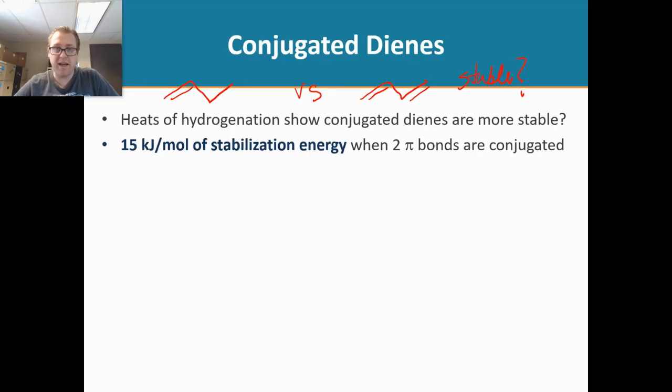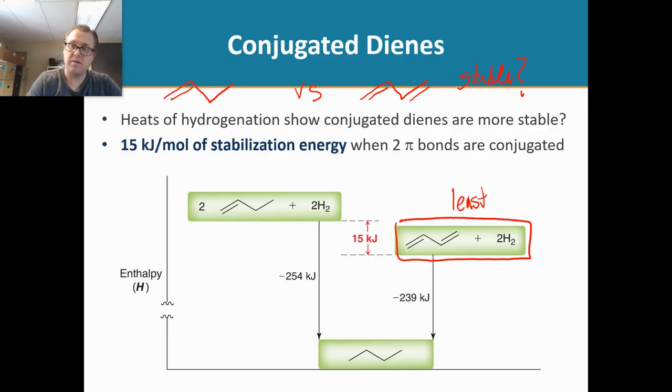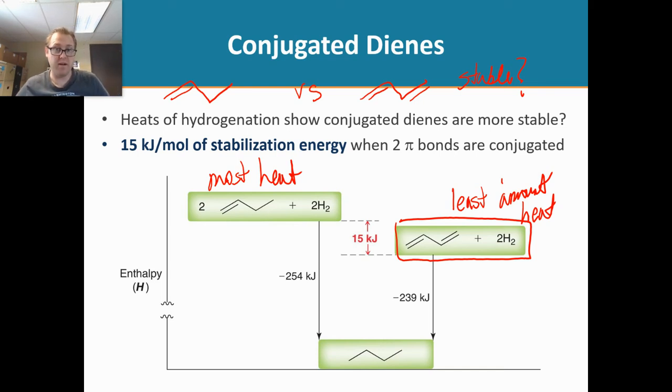So when we come back to our slides here, what do we see? There's our alkene. Look at this. Our diene gives off the least amount of heat. And our alkene gives the most heat. So, from that experiment, we have figured out that the conjugated diene is the most stable when you compare these two. Isn't that cool?